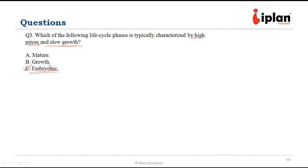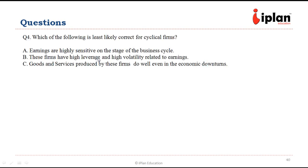The first phase, which is the embryonic phase, is going to have high prices and slow growth, so C is the right answer. In the maturity phase, prices will be stable, not high. In the growth phase, growth will be high but prices will be falling, so A and B are not the right answers.